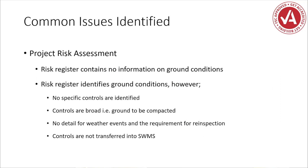Common issues identified when out on site: the project risk assessment doesn't even contain any information on ground conditions. From a starting point, it should at least identify them. Or we find the risk register identifies ground conditions but has no specific controls identified. Or controls are very broad — it might mention ground to be compacted or inspected, but there's no specificity about how that is to occur. And then there's no detail on weather events or requirements for re-inspection. Some crane pads are in place for a significant amount of time and do get affected by weather, so there should be detail about the frequency of re-inspection.